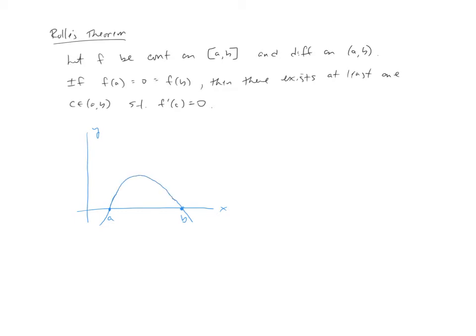Okay, we've got this condition met, we've got this condition met, we have these conditions met, with all of those conditions in place, then there exists at least one c between a and b such that f prime of c equals zero.